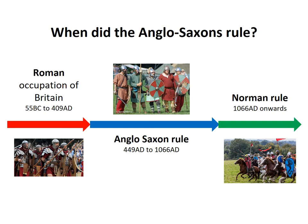Up to roughly 409 AD the Romans occupied Britain. When the Romans left, it left Britain in a bit of a state. Some historians used to call this the Dark Ages, though most historians now call this the Early Middle Ages. In that period the Anglo-Saxons ruled, until 1066 when at the Battle of Hastings the Normans came in and took over. The Anglo-Saxons are the group of people ruling Britain and England in this period.